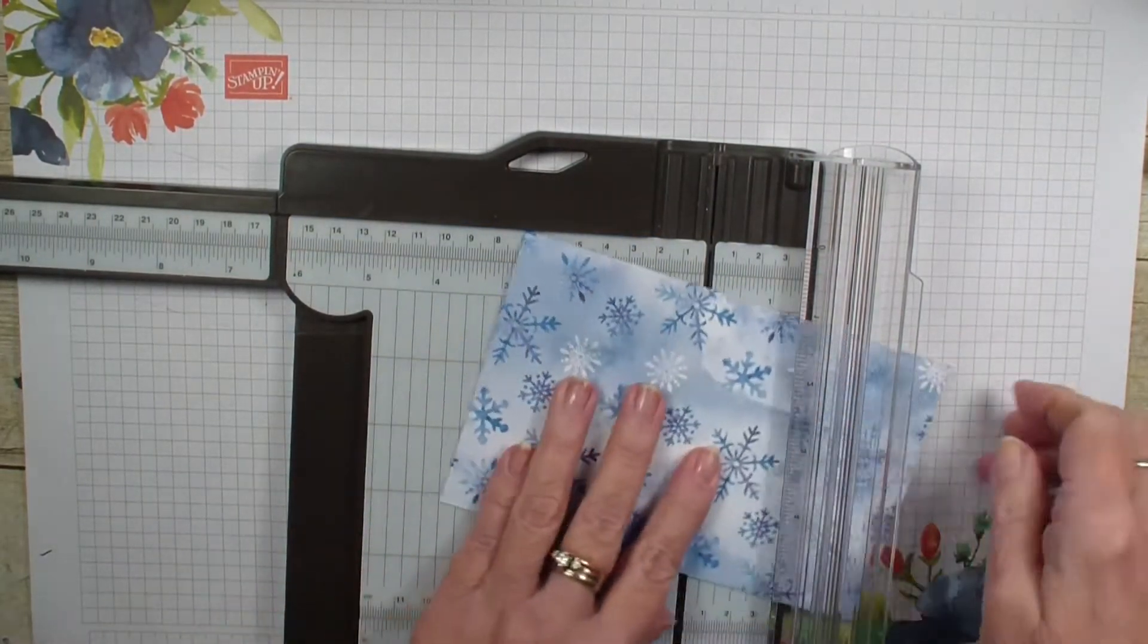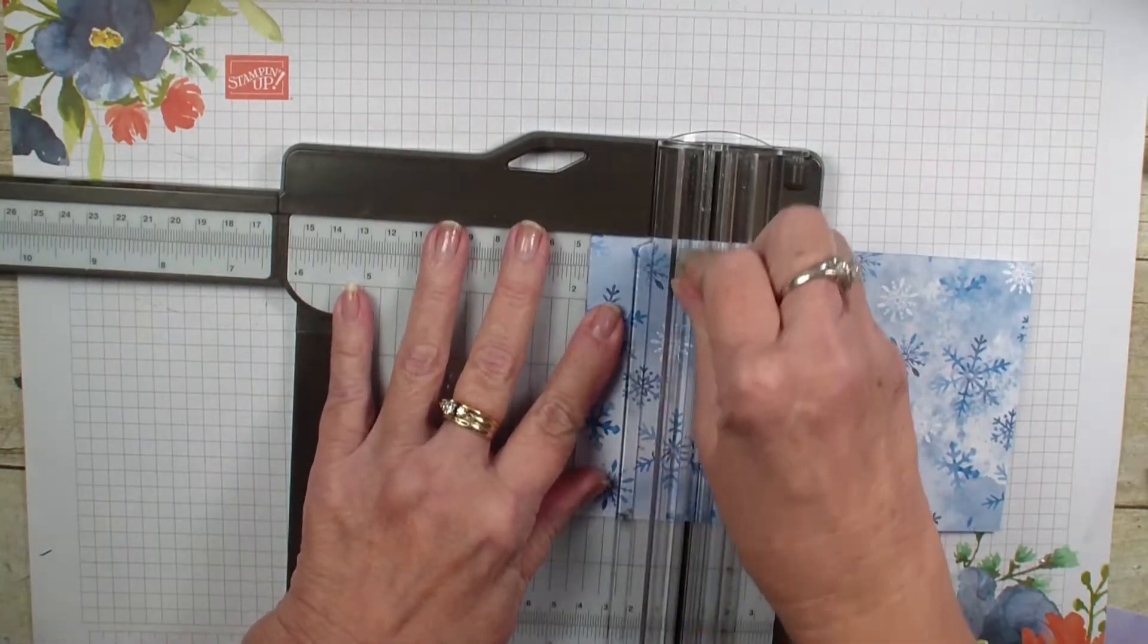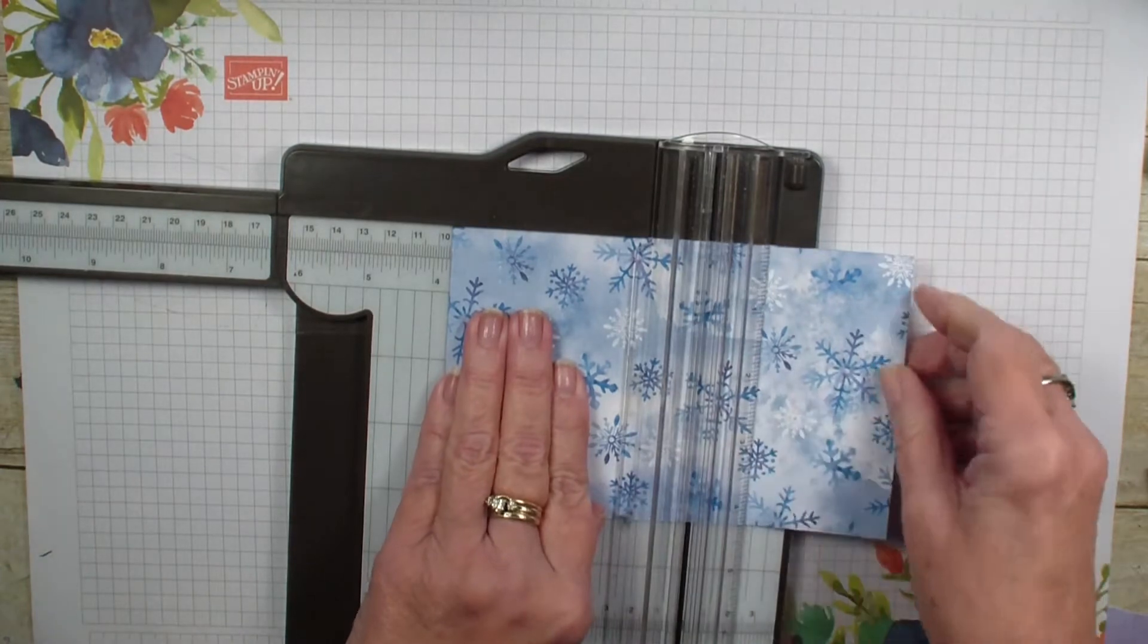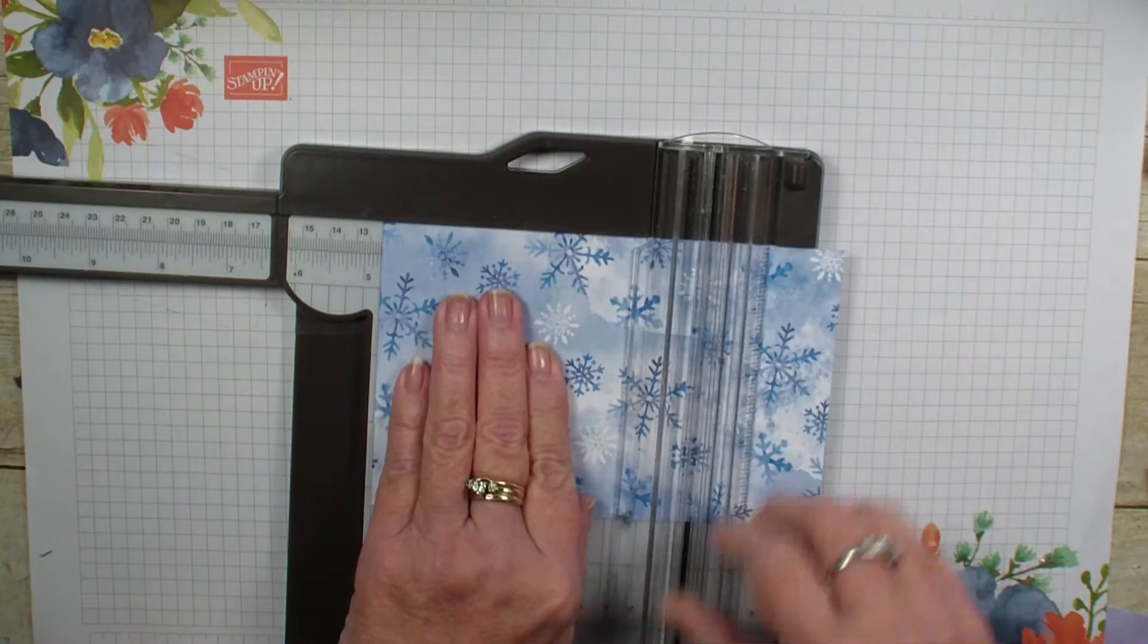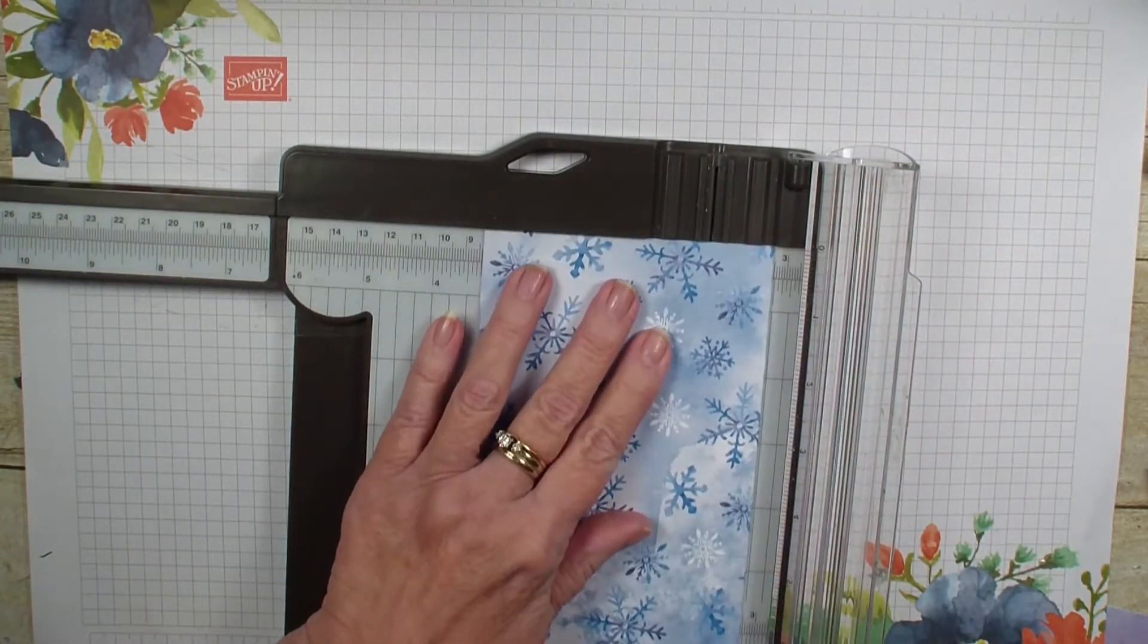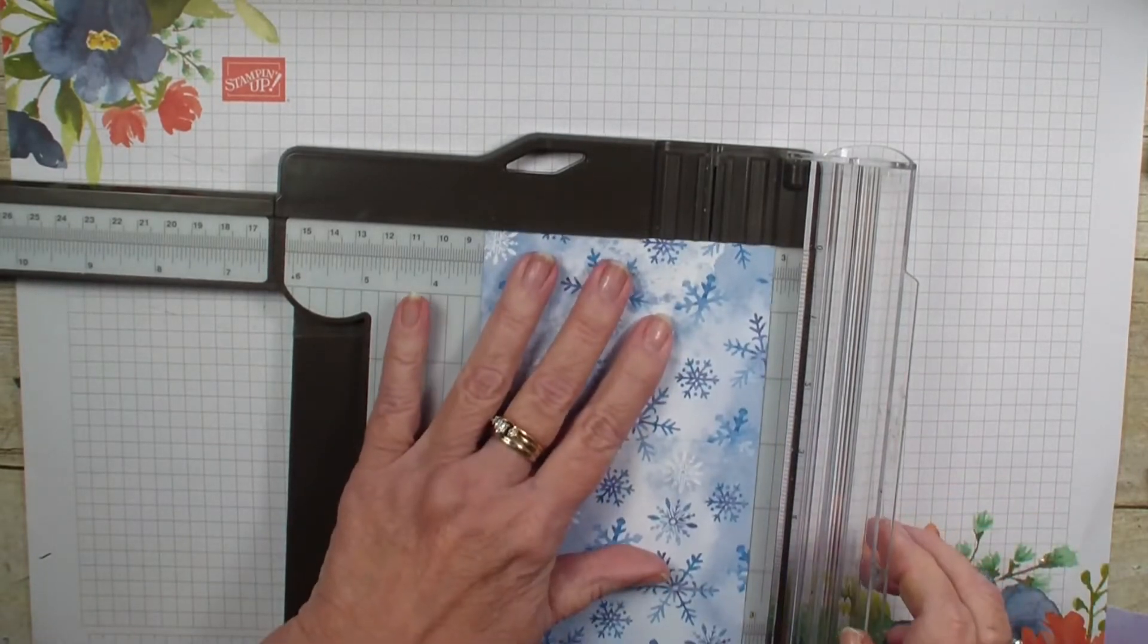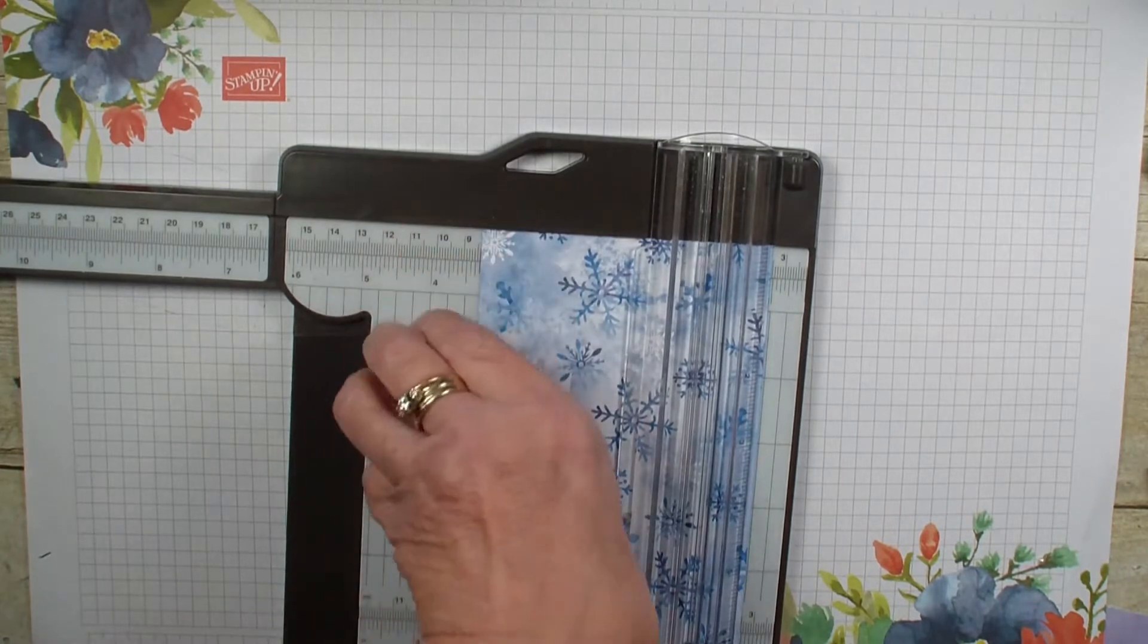We're going to flip it around and score at 1 and 3/4, 3 and 3/4, finally at 4 and 3/4, then we're going to score along the 4 and 1/4 an inch on each side. We're going to bring in our snips to do some cutting.